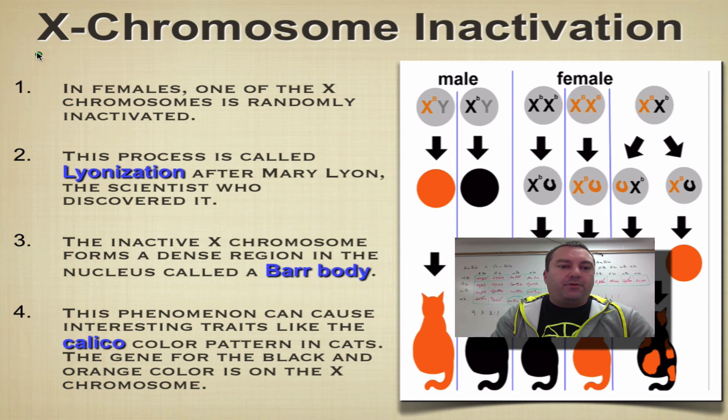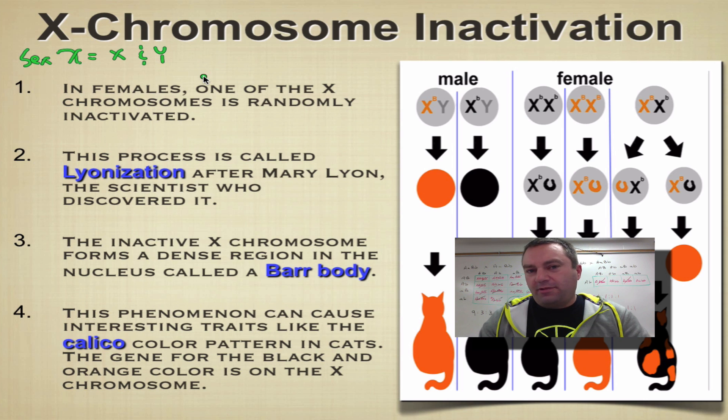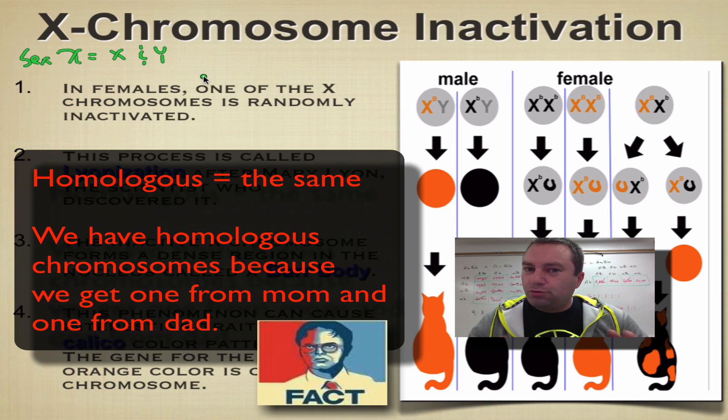If you can remember from a previous screencast, we talked about the sex chromosomes. The sex chromosomes are delineated by letters - you have an X and a Y chromosome, and they're the only chromosomes that are not truly homologous pairs.